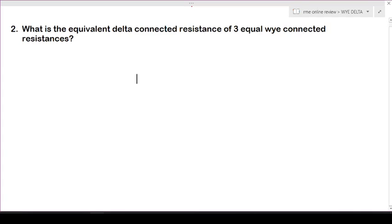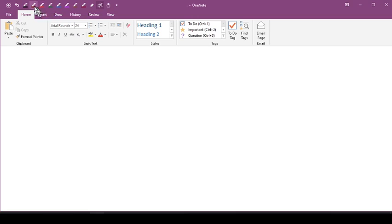Okay, so we have this problem: What is the equivalent delta connected resistance of three equal wye connected resistances? So let's go directly to the solution.